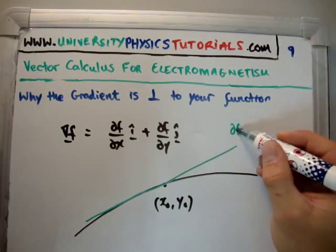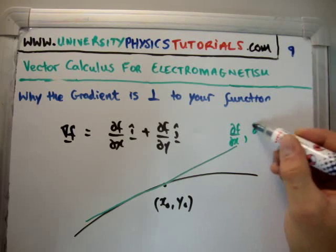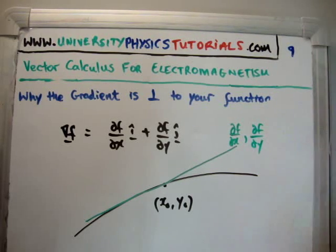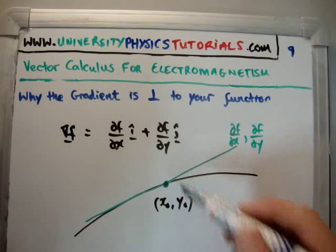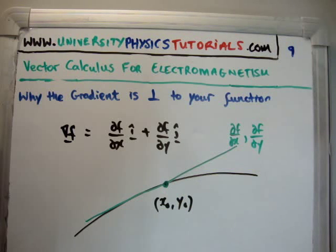So, we're going to need del f del x, and we're going to need del f del y. That would give us the slope of the tangent line. Plugged in the point x0, y0 would give us the equation of the tangent line.